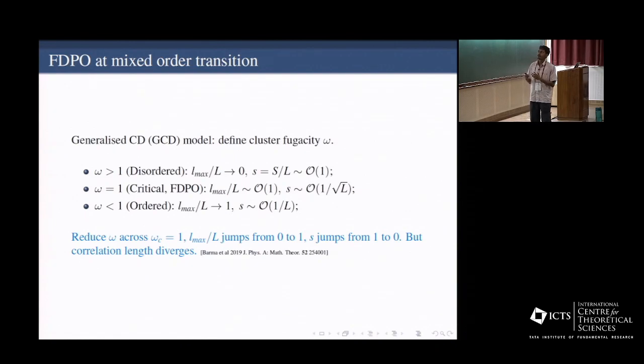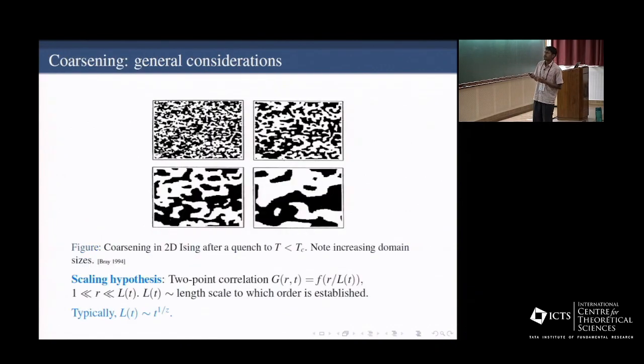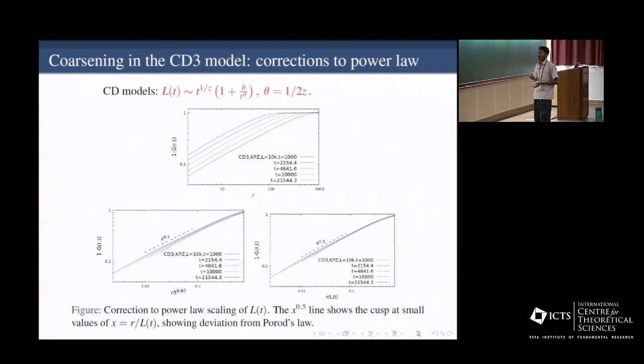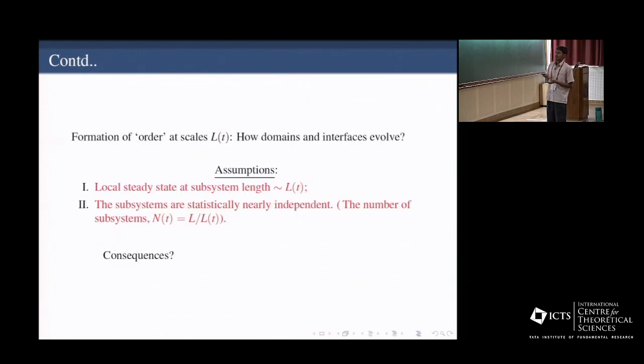So more on that later, so if I have time, I will tell, but yeah, just to skim through, how does these quantities behave while coarsening? It turns out that in the coarsening, it means that the order is emerging from uniform initial condition. You have the order emerging in a different, increasing length scale, and the length scale is typically some power of time. However, in case of the CD models, and maybe generically for FDPO, there are important correction terms, which is observed through the correlation. And it turns out that there are some local steady state and subsequently independent assumptions that have been taken.